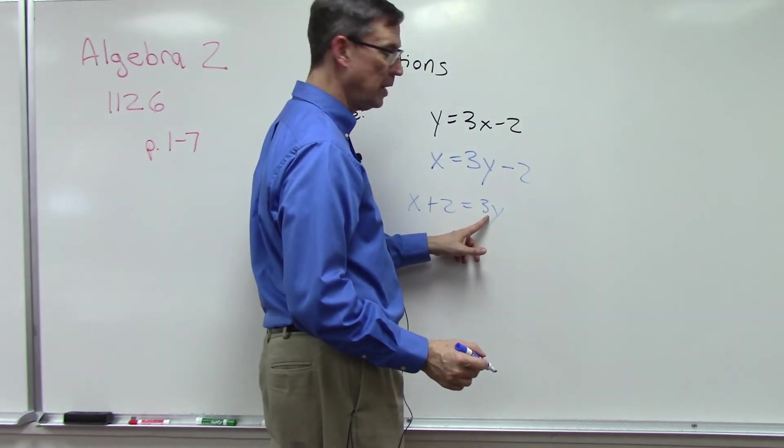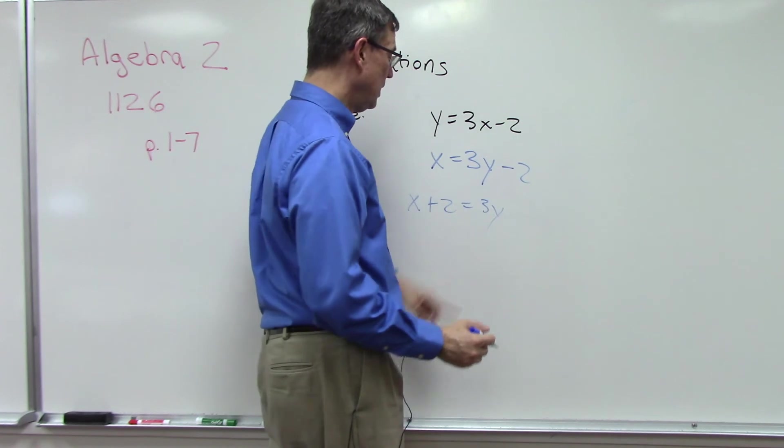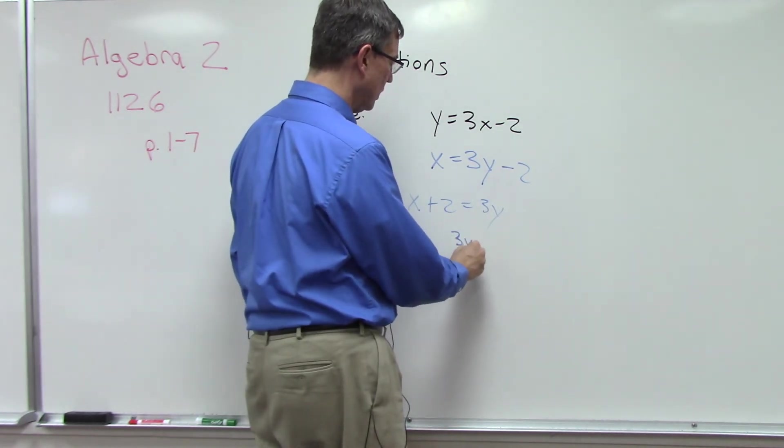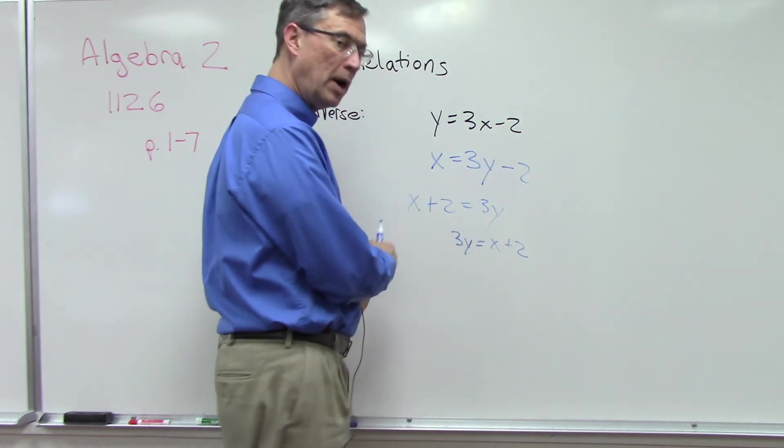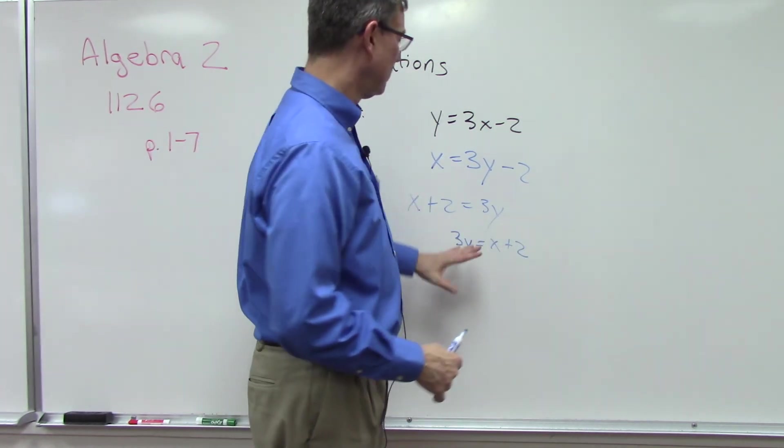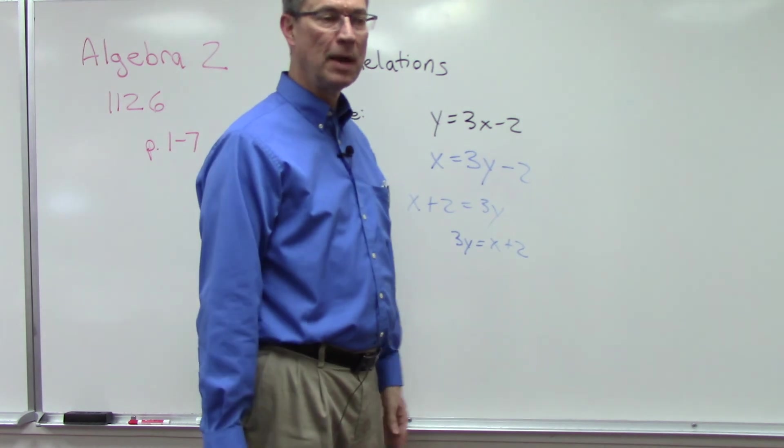We're solving for y, so we need to isolate y, which means we need to divide both sides by 3. Sometimes students find it easier, and we can do this, we can just flip the sides like this: have the y on the left, x plus 2 on the right.